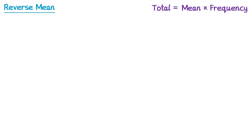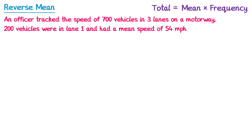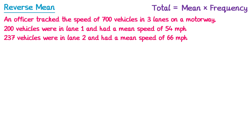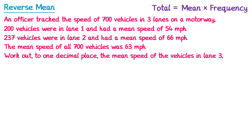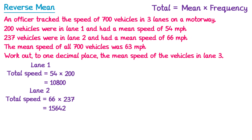Now let's try one more question with a similar style. An officer tracked the speed of 700 vehicles in three lanes on a motorway. 200 vehicles in lane 1 had a mean speed of 54 miles per hour, and 237 vehicles in lane 2 had a mean speed of 66 miles per hour. For lane 1: 54 multiplied by 200 gives a total of 10,800. For lane 2: 66 multiplied by 237 gives a total of 15,642.